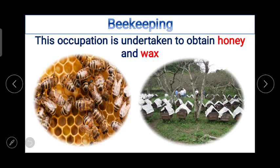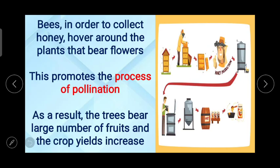Next is beekeeping. This occupation is undertaken to obtain honey and wax. Bees move around plants that bear flowers and this promotes the process of pollination, which increases production — trees bear a large number of fruits and crop yields increase. Beekeeping is an important occupation with respect to agriculture and also generates good income, as honey is in demand in urban areas and is becoming a very important part of diet.